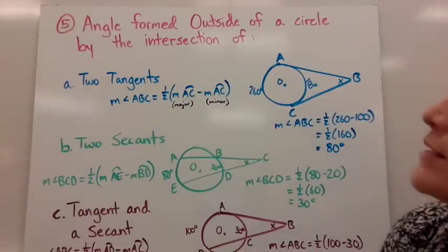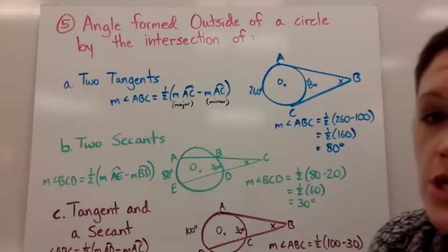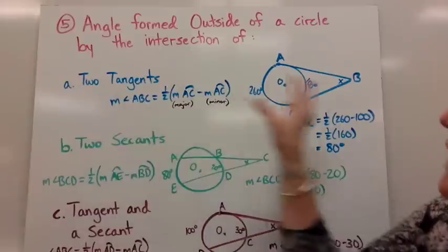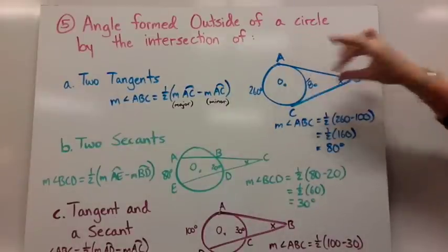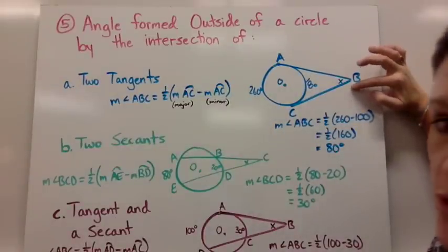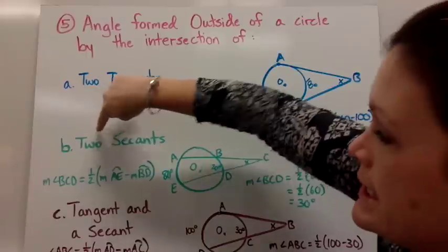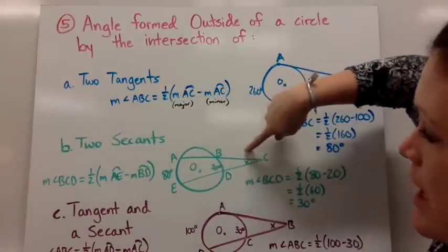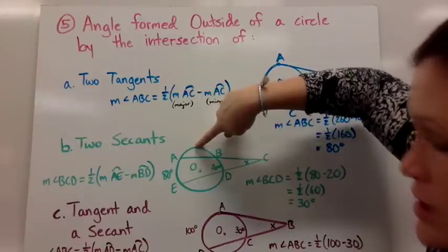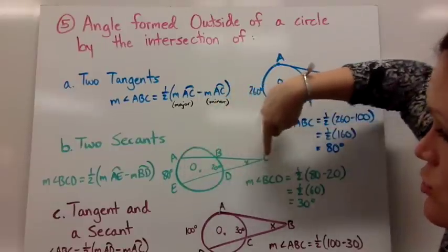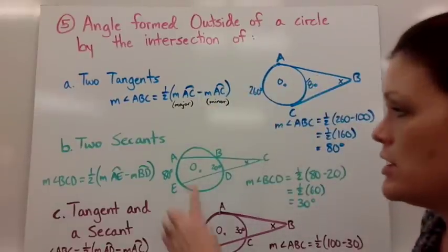The angle formed outside of a circle by the intersection of, if we have two tangents forming our angle, but our angle itself is actually sitting outside the circle. If we have two secants, so they don't have points touching like a tangent does, the secant goes through the circle, and then touched on the other side, but the center,